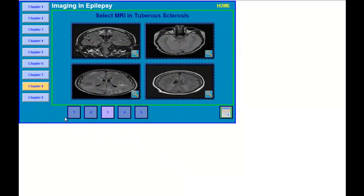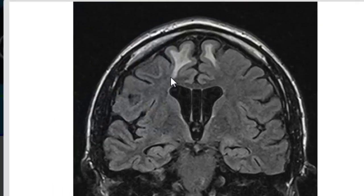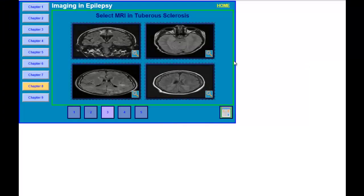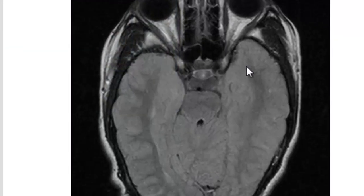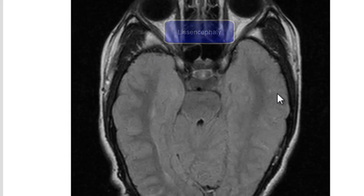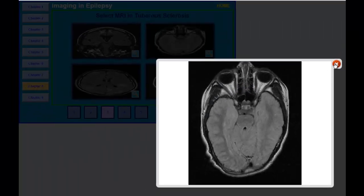The next question is to select an MRI in tuberous sclerosis. In this first image, you see increased signal in the white matter in the frontal regions — this is typically seen in patients with traumatic head injury, so this is not tuberous sclerosis. In the next image, you see flattening of the gyri — this is lissencephaly — and there are areas of dysplasia on both the right and left hemisphere, so this is also not typical of tuberous sclerosis.